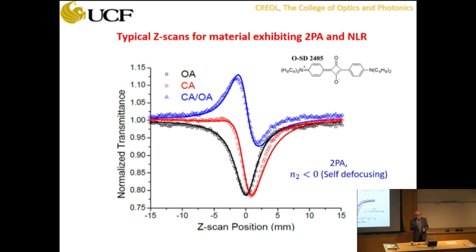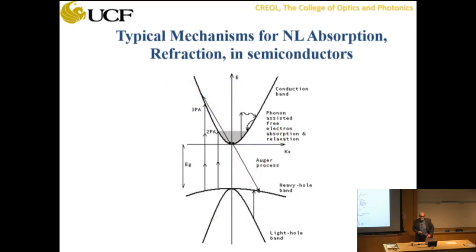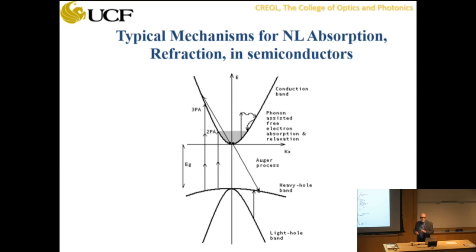Now, semiconductors. In semiconductors you have valence bands and conduction bands. You can make excitations via two-photon, three-photon, or single-photon absorption. When you make excitations, you produce carriers in the conduction band and then get free carrier absorption. Holes are left in the valence band, allowing absorption from lower valence bands to vacant states in the upper valence bands. There's a lot going on, but I want to focus on two-photon absorption: going from valence band to conduction band using two photons.